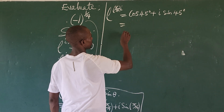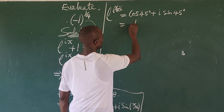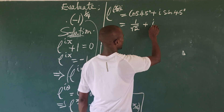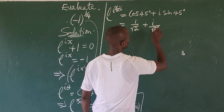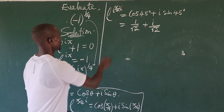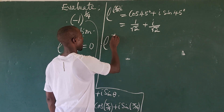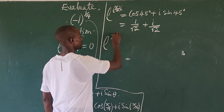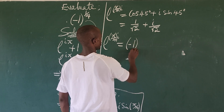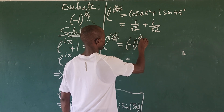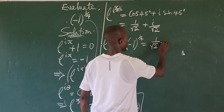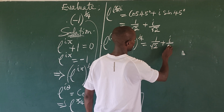Since sine 45° equals 1 over √2, this is equivalent to saying that (−1)^(1/4) equals e to the power of iπ over four, which in turn equals 1 over √2 plus i times 1 over √2.